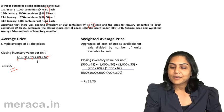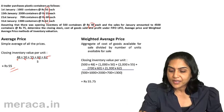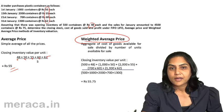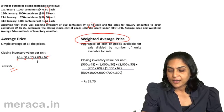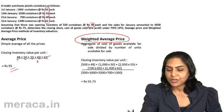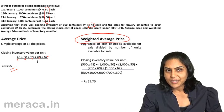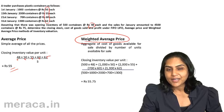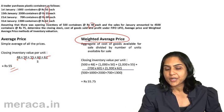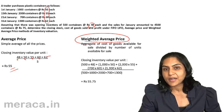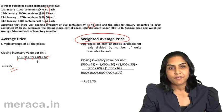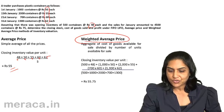Let us come to the weighted average price method — a more scientific method of valuing inventory. Here both the prices and the relative quantities are considered in order to arrive at a price for issuing and valuing inventories.